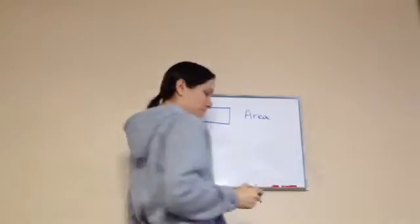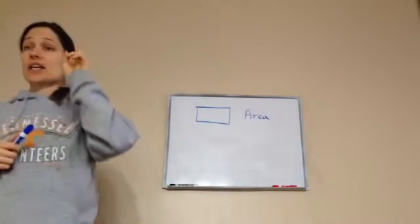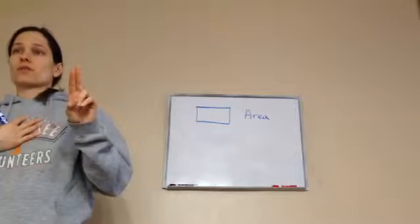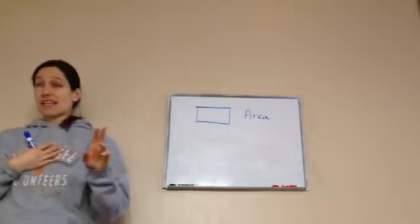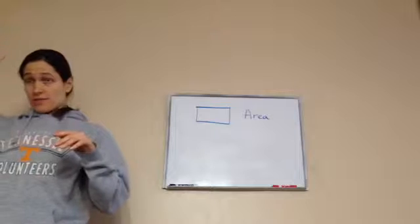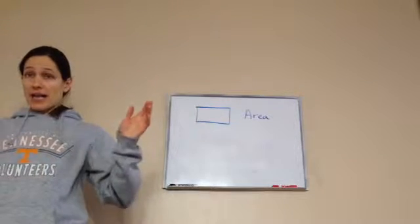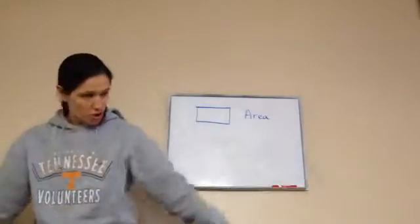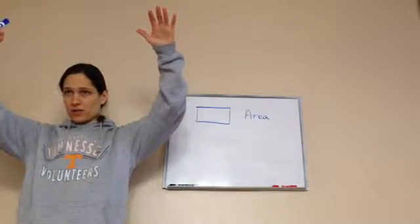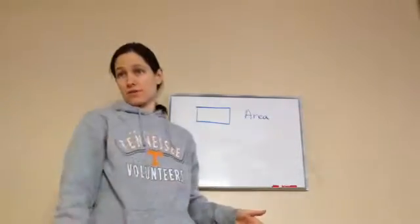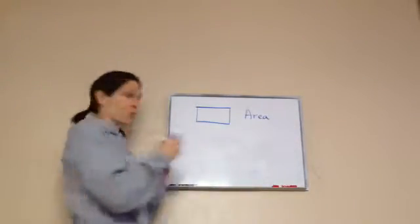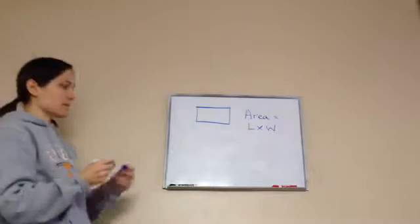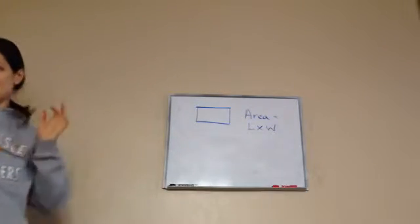Area always involves two dimensions. As people, we are 3D — we have length, width, and height. But when you're talking about a flat spot that covers a surface, does it have any height? No. You're just working with length and width. So what area actually equals is length times width. You need to know that — L times W, which stands for length times width. That's what area means.